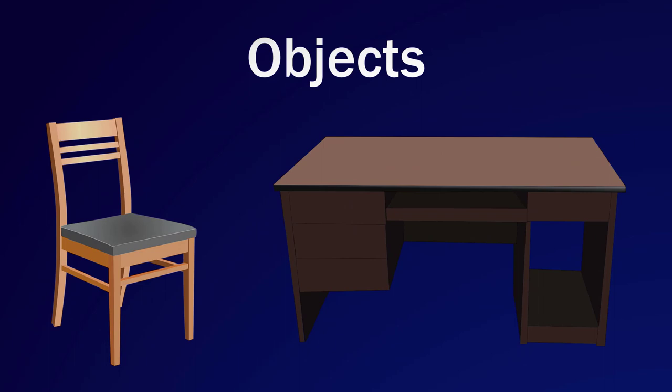How do we know the difference between a chair and a desk? On the one hand, we know them by their practical purpose — chairs are meant for sitting, and desks for working or writing on. But there are also certain characteristics we attribute to one but not the other. For instance, a chair is probably going to be at a lower elevation than the desk. A desk is also probably going to be wider than a chair. All these criteria by which we decide what is a desk and what is a chair constitute symbolic boundaries.